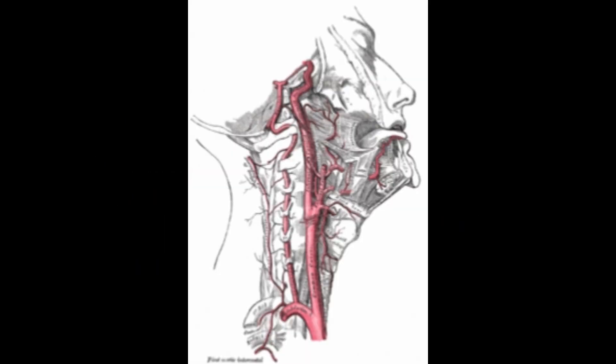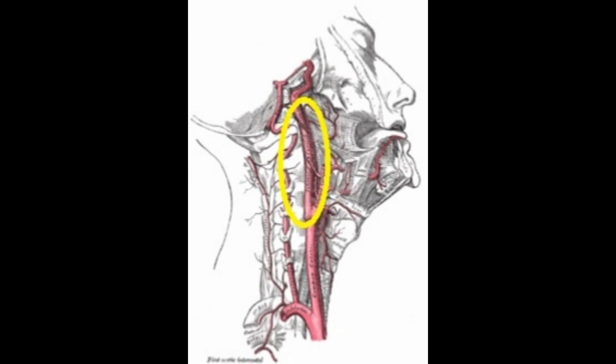The anatomy imaged with the carotid ultrasound includes the common carotid artery, which is imaged from the clavicle to the bulb. The bulb is the widest portion of the carotid artery just before the bifurcation. The external carotid artery is imaged from the bifurcation to the mandible, the internal carotid artery from the bifurcation to the ear, and the vertebral artery is imaged posterior to the internal carotid artery, running between the vertebrae.